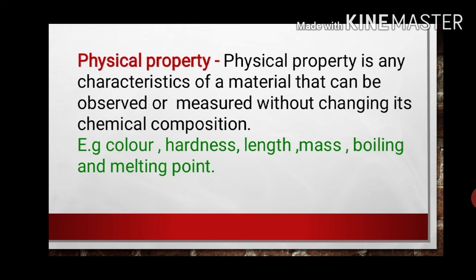First of all, what is the meaning of physical property? A physical property is any characteristic of a material that can be observed or measured without changing its chemical composition. By observing these characteristics, you can identify whether the given material is metal or non-metal. Examples include color, hardness, length, mass, and boiling and melting point. There are other physical properties also available that help distinguish metals from non-metals.